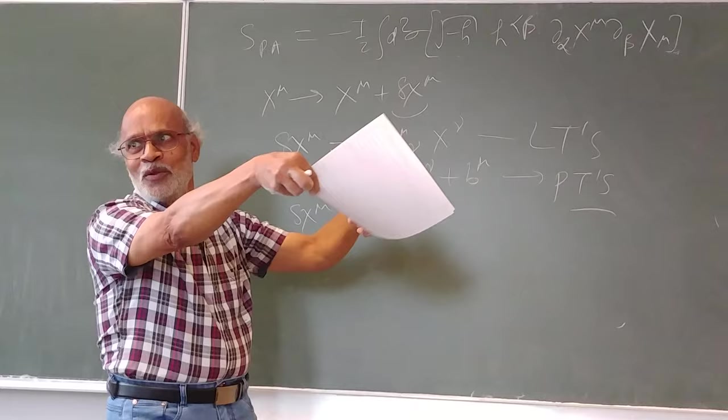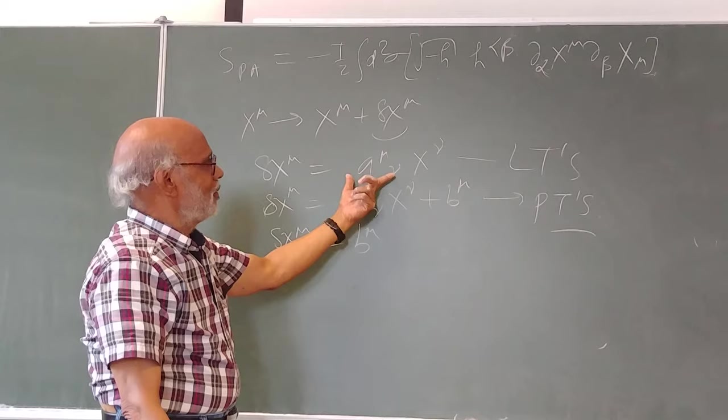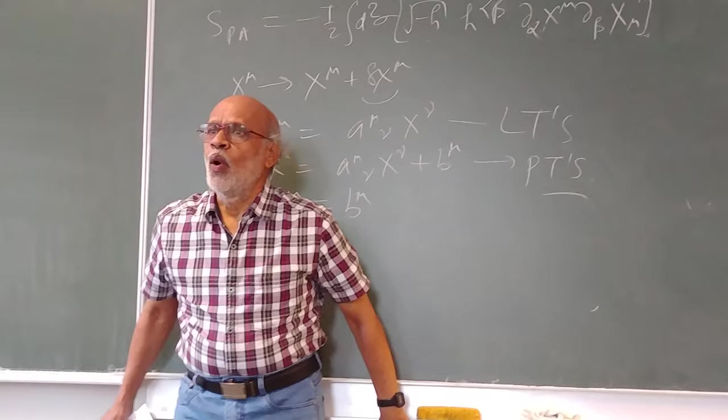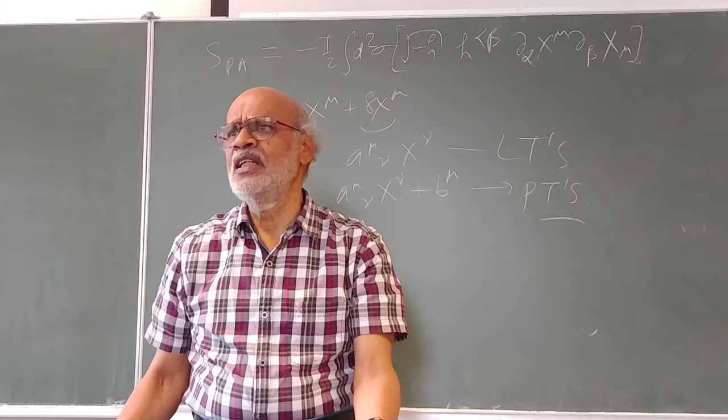Why am I calling them global symmetries? Because these symmetries, this or this, these would of course be a four by one or μ by ν matrix. But these elements, they do not depend on the worldsheet coordinates. If they do not depend on worldsheet coordinates then you call them global symmetries.